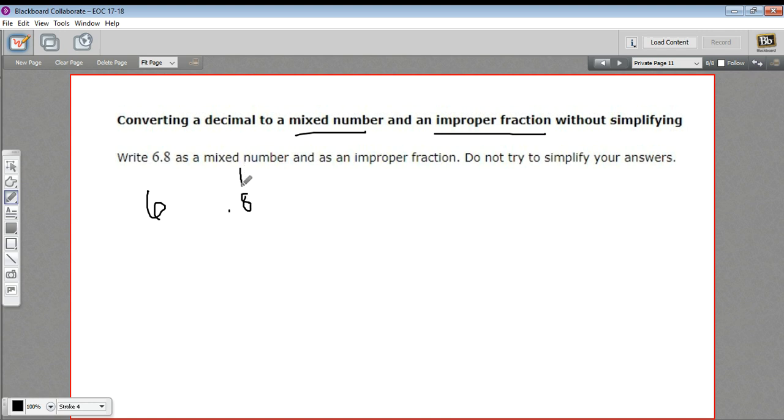In the 0.8, we just need to take the place here. This is one place to the right of the decimal point, so this is tenths. So I'd put it over 10 and put the number on top, so this is 8 tenths. And then I just stick the 6 on there. This is 6 and 8 tenths. So that's your mixed number part.